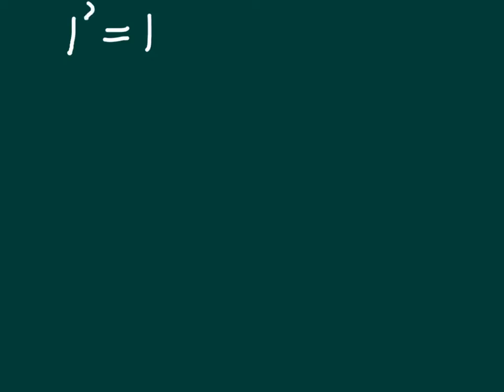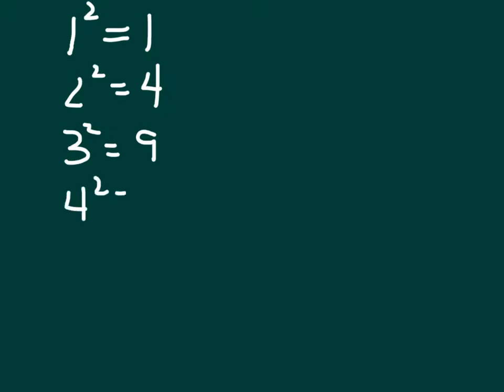All numbers such as the ones I've been showing you so far are called perfect squares. 1 times 1 is equal to 1; 1 squared is equal to 1. 2 squared is equal to 4, and 4 is a perfect square number. 3 squared is equal to 9. 4 squared is equal to 16. 5 squared is equal to 25. And so on — those are called perfect square numbers.